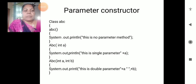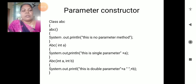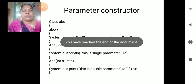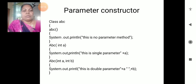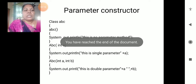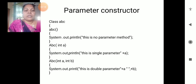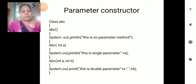Followed by the creation: int a is equals to - class abc, a is equals to new abc - object creation. We are passing the values as parameters. So this is the creation of constructor and creation of the methods. Thank you.